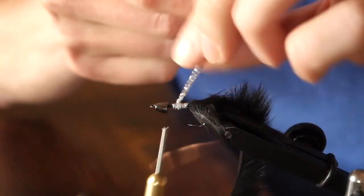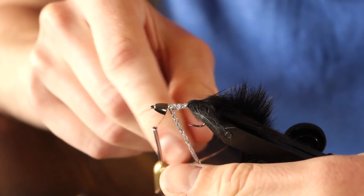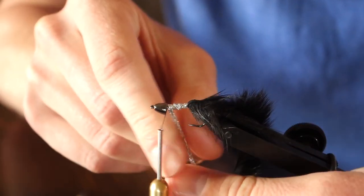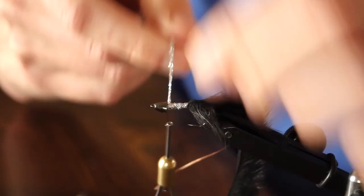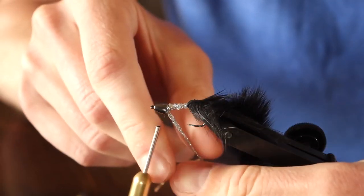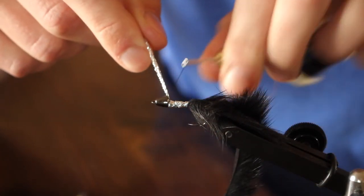I'll wrap it all the way up to the tungsten cone head. Go ahead and secure it off and clip off the excess.